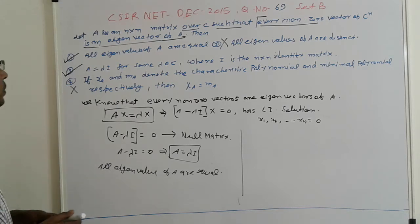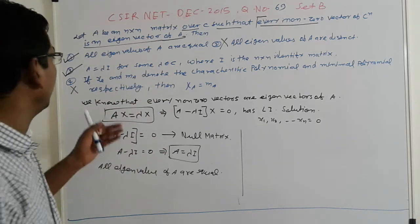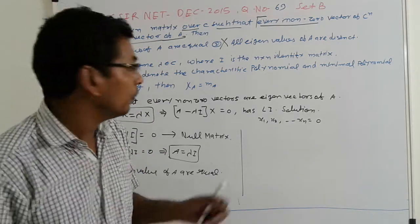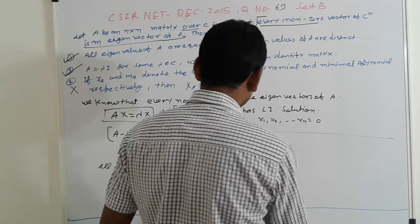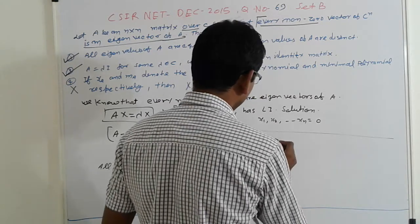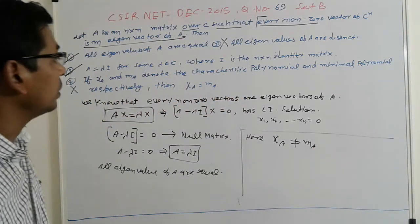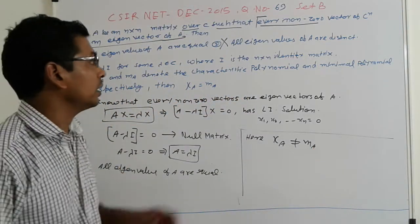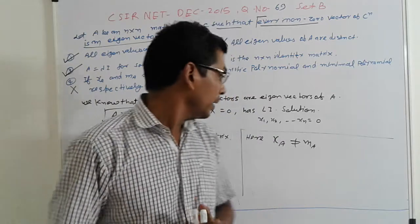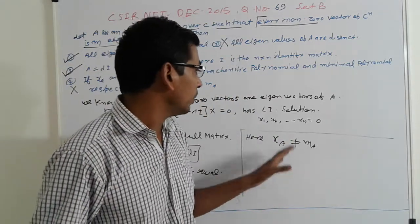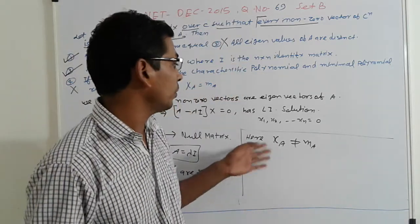Hence the fourth option: if χ and m denote the characteristic polynomial and minimal polynomial of A, then χ ≠ m is not possible here, because the roots are repeated. The number of repeated roots means the minimal polynomial generally equals the characteristic polynomial in this case, so the fourth option is incorrect.